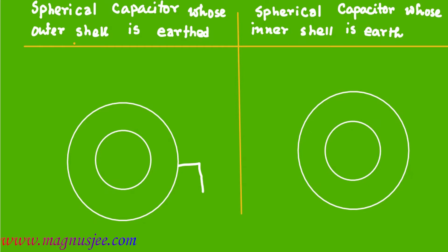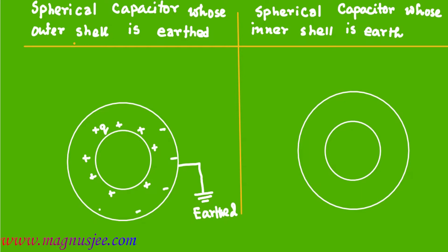We compare two types of spherical capacitors. On the left hand side we have a capacitor whose outer shell is connected to earth, and plus q charge (positive charge) is given to the inner shell or inner conductor of radius r1. There will be induced negative charge on the inner surface of the outer shell.